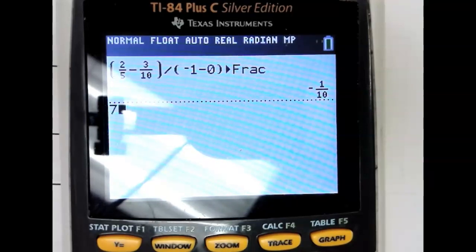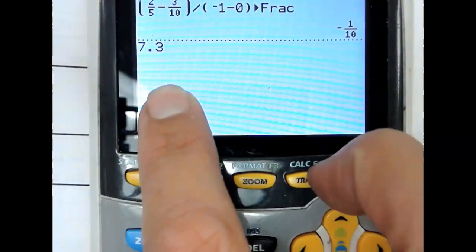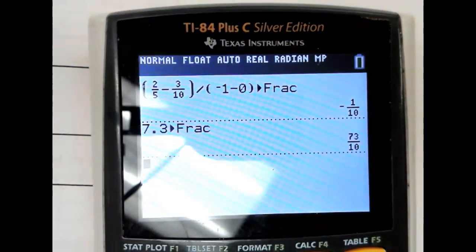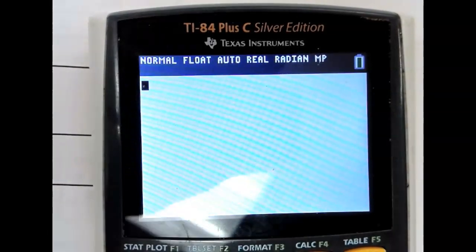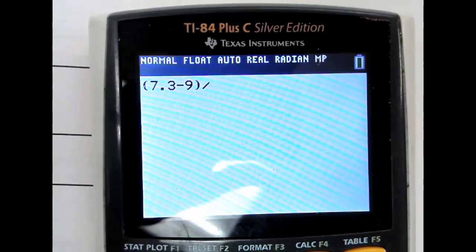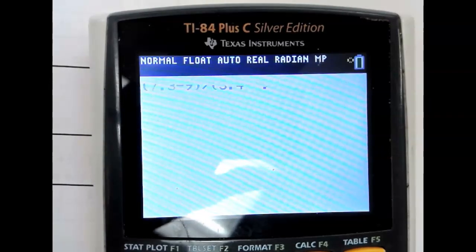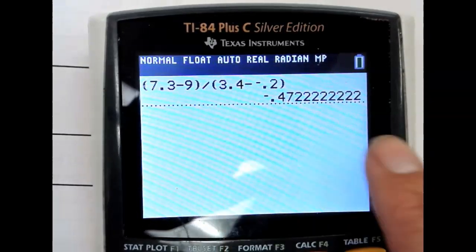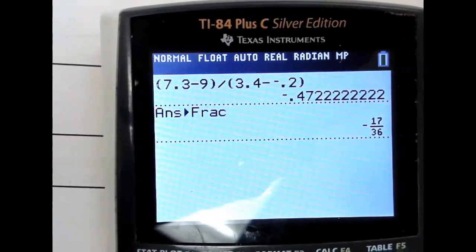So like if you wanted 7.3 to be a fraction, you'd type 7.3 in, and then math, enter, enter. He's right. And it will turn it to a fraction. However, for the case of this problem, what you could do in number one is do 7.3 minus 9, close parentheses, divided by 3.4 minus negative 0.2. And then if it gives you it as a decimal, now you can hit math, enter, enter, enter, and you get that negative 17 over 36.